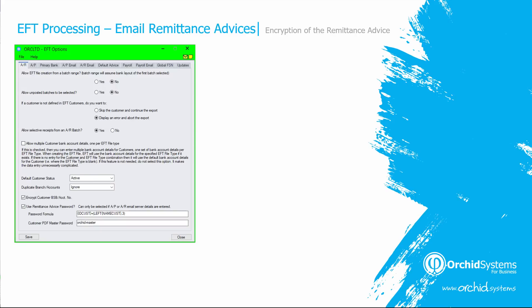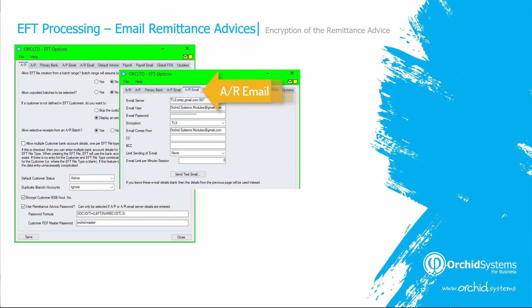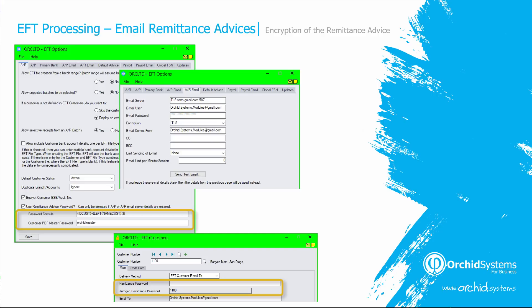You can password protect the remittance advice. In AR, if you select 'use remittance advice password' and define a formula for the password, and also specify EFT SMTP details, then when the email remittance advice is sent, the attached PDF will have that password applied. The password can be defined at an overall level or on an individual EFT customer-by-customer level. There is a video on the website explaining how to define formulas for the passwords.